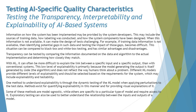Transparency can be tested by comparing the information documented on the data and algorithm to the actual implementation, and determining how closely they match. This keeps things transparent between the information used to train the model and what is being used for testing it.